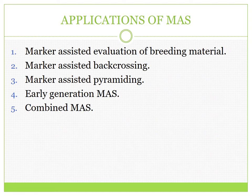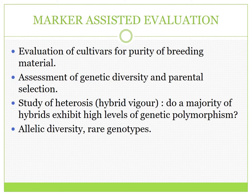MAS has many applications. It can be applied to evaluate breeding material prior to planting, to assist in back-crossing, pyramiding, and to select plants for downstream hybridization experiments — defined as early generation MAS or combined MAS. Marker-assisted evaluation can also be applied to assess genetic diversity of germplasm, selection of parental genotypes, the study of heterosis or hybrid vigor, and to assess allelic diversity and select rare genotypes for inclusion into breeding programs.